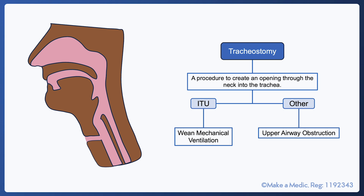This is an important part of the rehabilitation process for many ITU patients. The main other context in which you are likely to see a tracheostomy tube is in head and neck surgical patients who have some form of upper airway obstruction that needs to be bypassed.